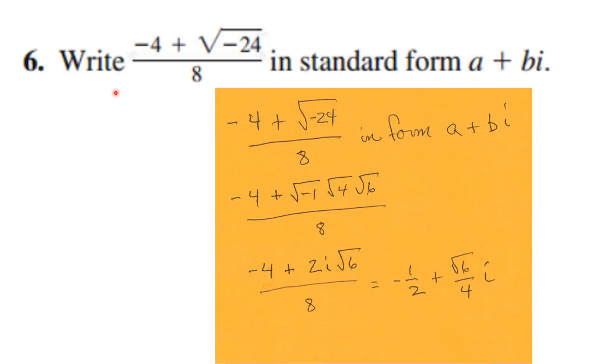On number six, we're to write minus 4 plus the square root of minus 24 over 8 in standard form a plus bi, where i is the square root of minus 1. We start with minus 4 plus 2i times the square root of 6, all over 8. In lowest terms, that's negative 1/2 plus (square root of 6 over 4)i.